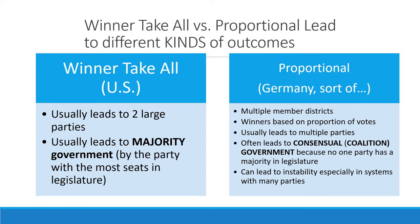Because of Duverger's law, we get different kinds of outcomes and government styles based on which system is chosen. In a winner-take-all system like the US, it usually leads to two large parties, sometimes three, and this usually leads to majority government where the party with the most seats almost always has 50% or more, so no coalition is needed to govern. In a proportional system with multi-member districts, that usually leads to multiple parties and often to coalition government, because no party has a 50-plus-one majority.